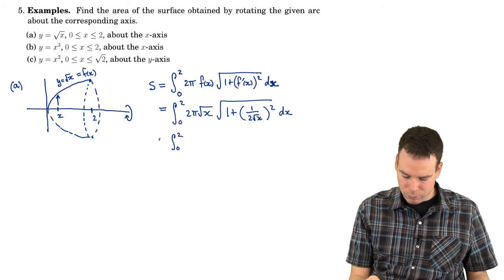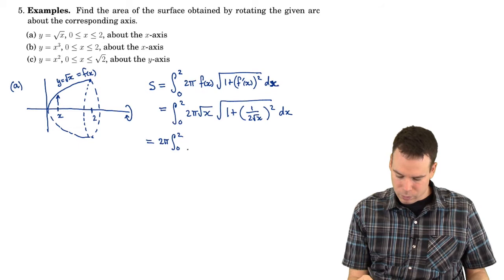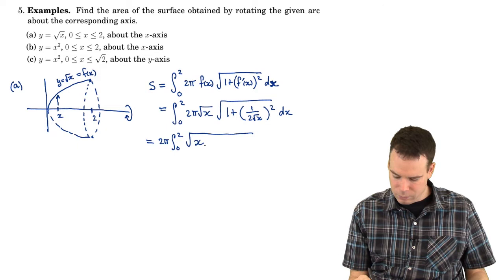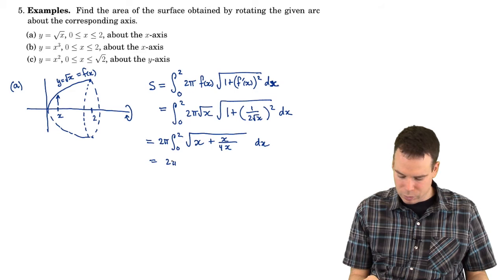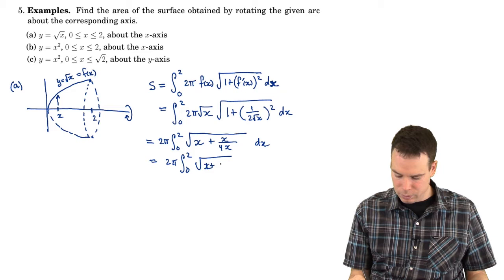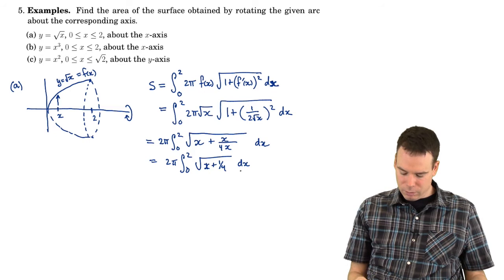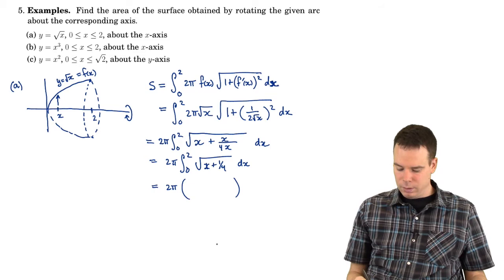At this point it's an exercise in integration. I'm going to pull out 4 times x dx, and the x's cancel, so this becomes 2π times the integral from 0 to 2 of the square root of x plus 1 quarter, dx. This is just a bit of algebra to simplify the integrand into a form that looks easier to integrate. At this stage we can see the anti-derivative.